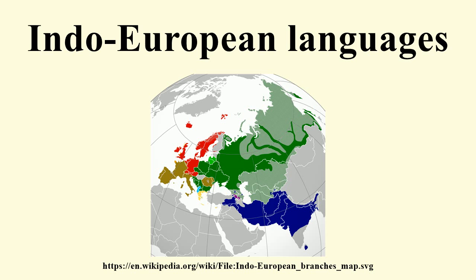Epigraphically Indo-Aryan is attested from the 3rd century BC in the form of Prakrit. The Rig Veda is assumed to preserve intact records via oral tradition dating from about the mid-2nd millennium BC in the form of Vedic Sanskrit. Iranian, or Iranic, is attested from roughly 1000 BC in the form of Avestan, and epigraphically from 520 BC in the form of Old Persian. Nuristani and Albanian are also branches, Albanian attested from the 14th century AD, with Proto-Albanian likely evolved from Paleo-Balkan predecessors.